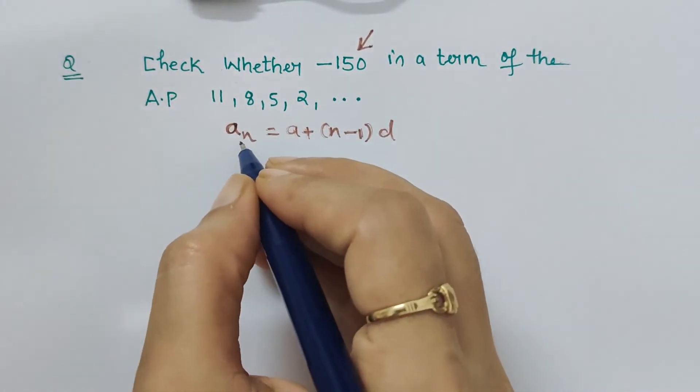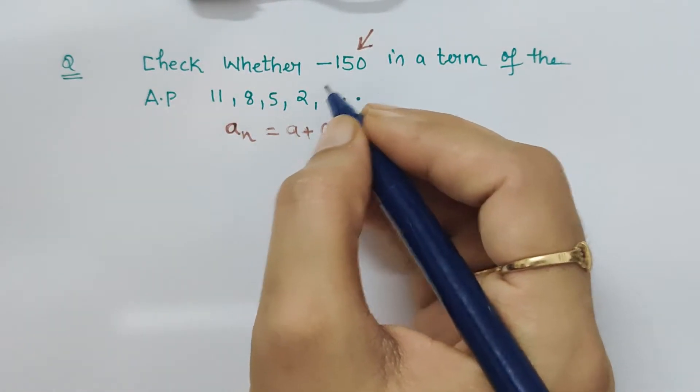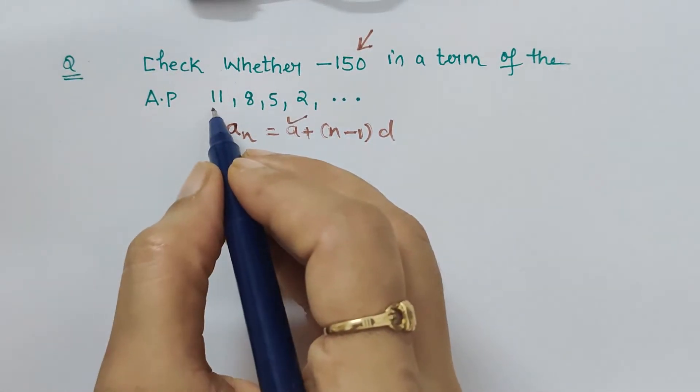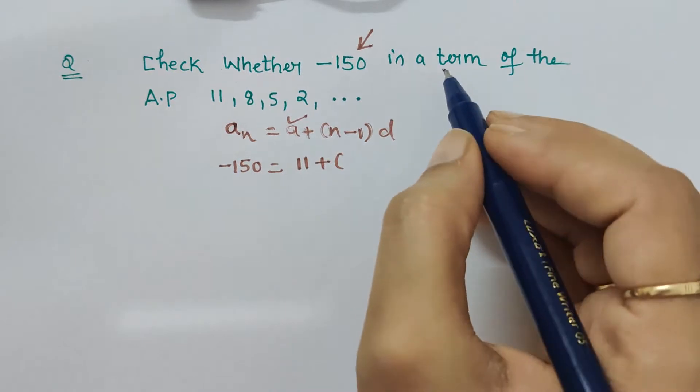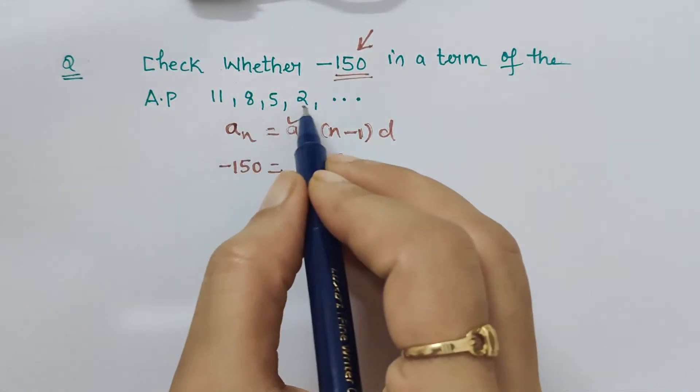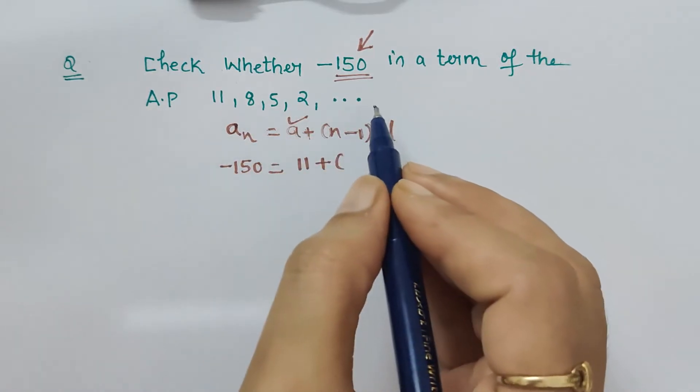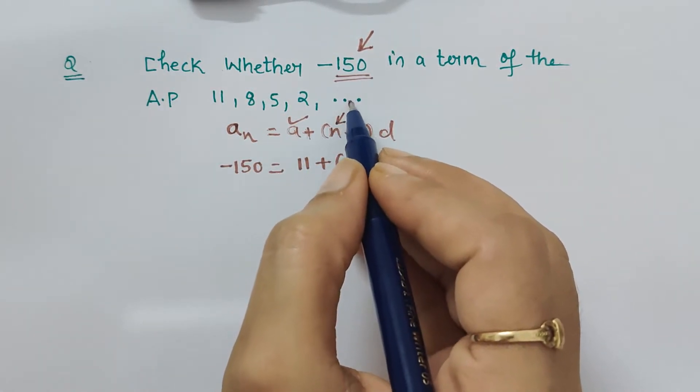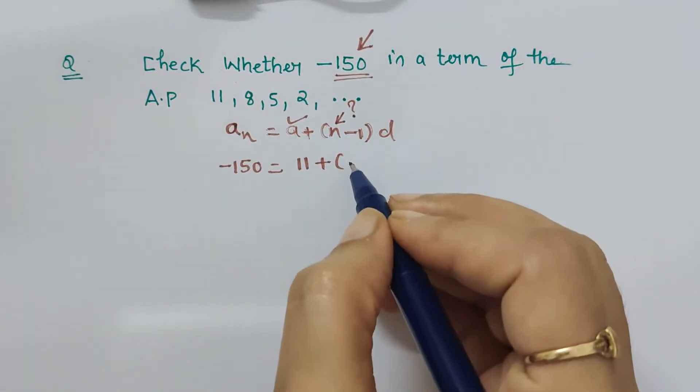Let's put a_n as -150. So -150 equals a, which is the first term, which is 11, plus we have to find this. This is any term of this sequence, of an AP, so we are not aware which term this is, so we have to find and calculate n.